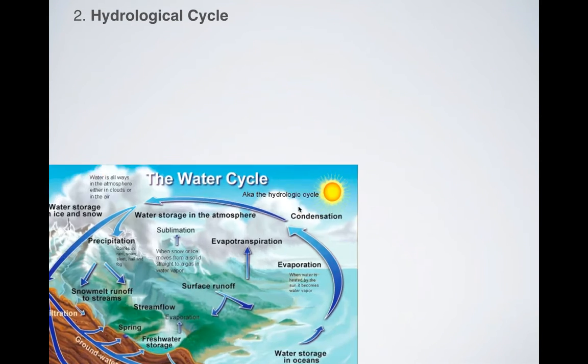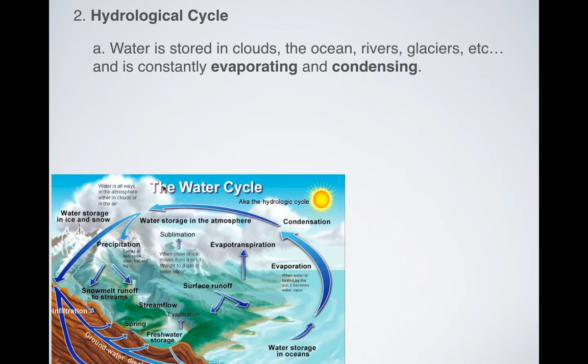Now our next cycle, the hydrological cycle, also known as the water cycle, is extremely easy. Water is stored in clouds, the ocean, rivers, glaciers. It's stored all over the place and water is constantly evaporating and condensing. Evaporation is when we go from a liquid into a gas, and condensing is when we go from a gas into a liquid.